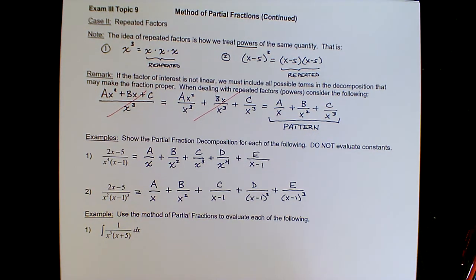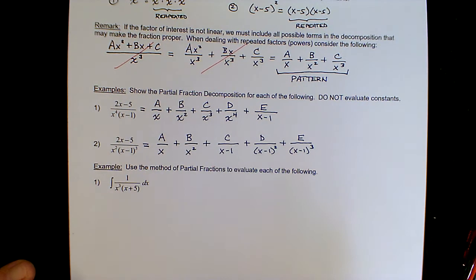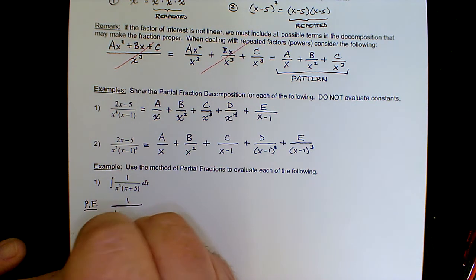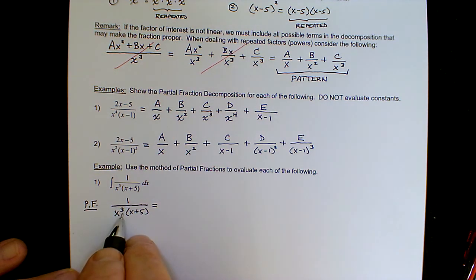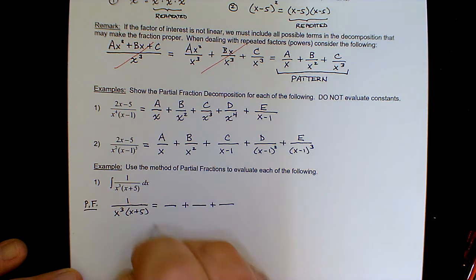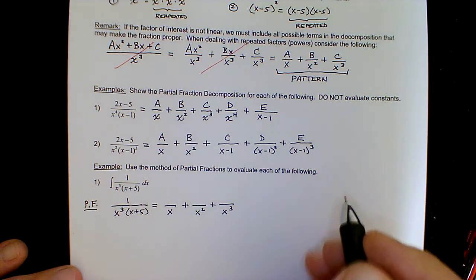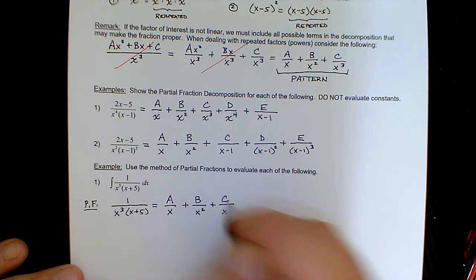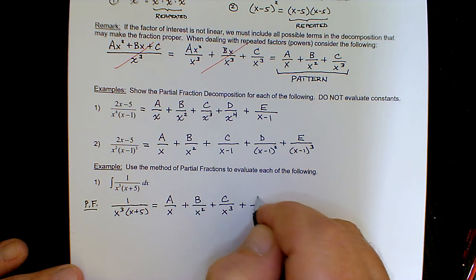Now we'll use this idea to evaluate an integral involving repeated factors. The expression is already factored: 1 over x cubed times x plus five. We set up the partial fraction decomposition. x cubed is a repeated factor, so there are three fractions from it: denominators x, x squared, and x cubed, each with a constant numerator. The x plus five is a separate linear factor, so just a constant d above that.